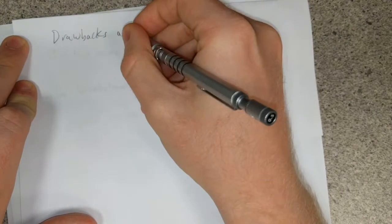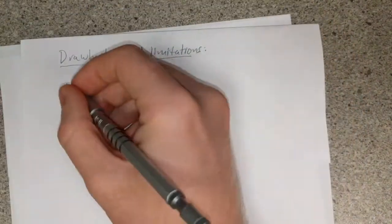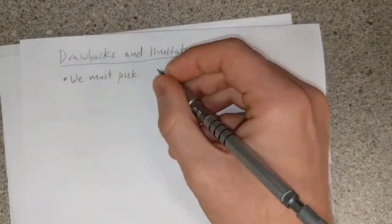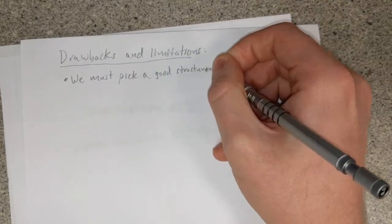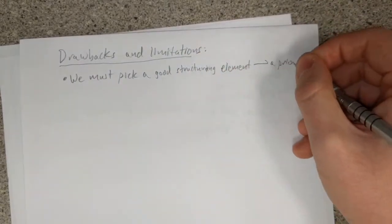This simplicity does come at a cost. Proper morphological operator usage dictates that we must select a good structuring element, which does assume some level of a priori knowledge about our image.